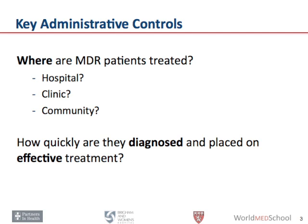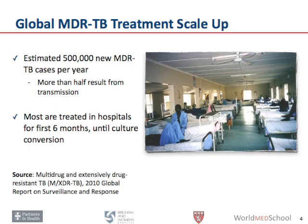A key administrative control is how quickly MDR-TB patients are diagnosed and placed on effective treatment — underline effective. Globally, there are an estimated 500,000 new MDR-TB cases per year. Most are treated in hospitals and, unsurprisingly, more than half of MDR-TB cases are believed to result from transmission, probably many of them in hospitals.